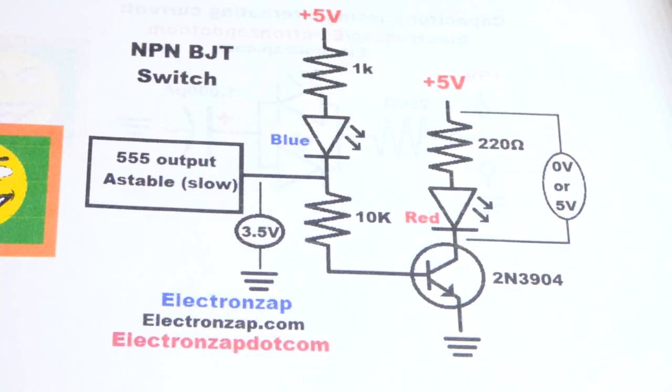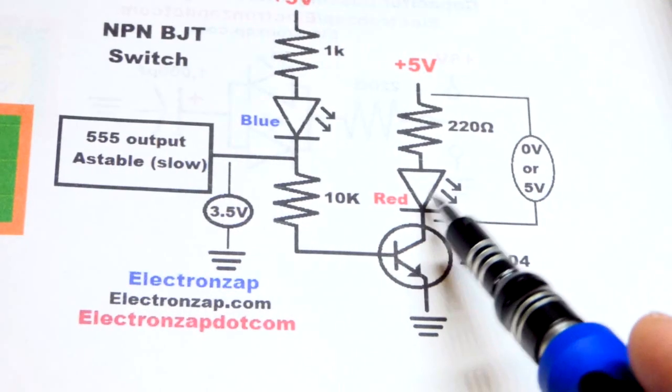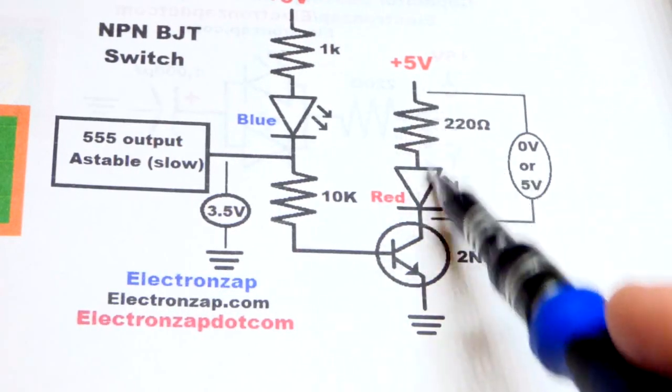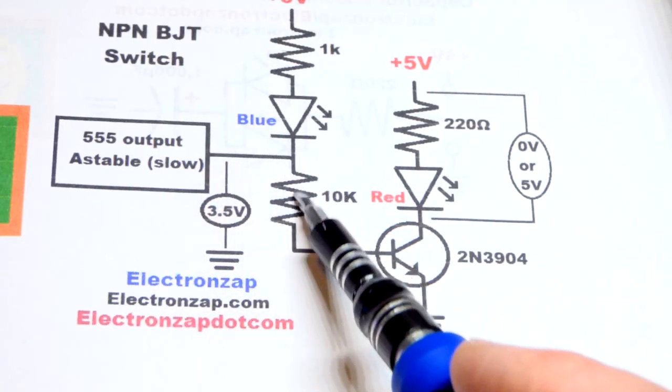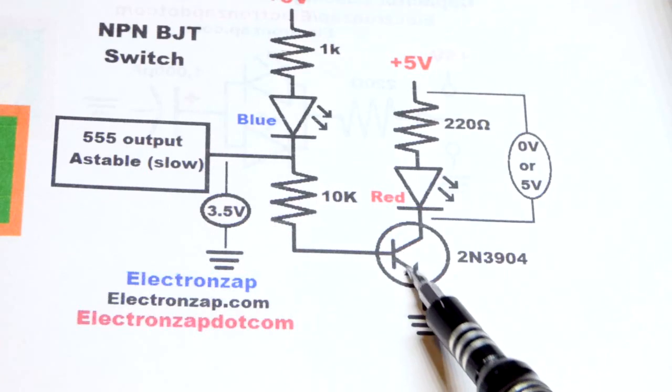And again for what we were doing it was just fine. But let's say it's not. Let's say for whatever reason we need 5 volts across the resistor and LED. Well we can send a small amount of current from the base to emitter there.